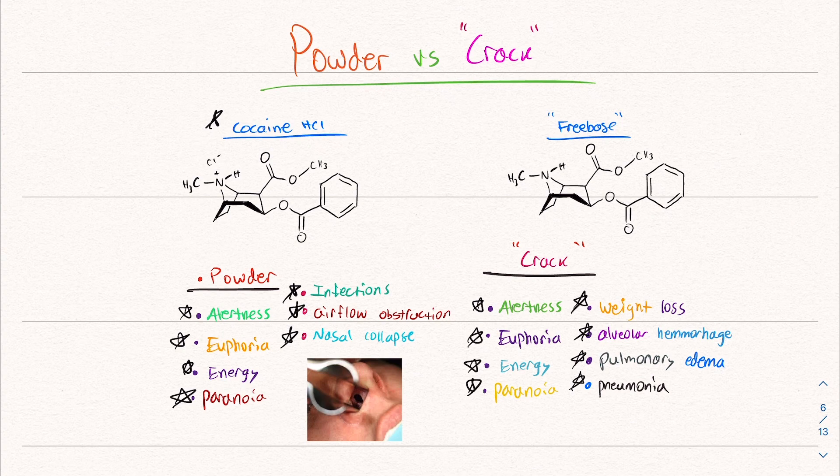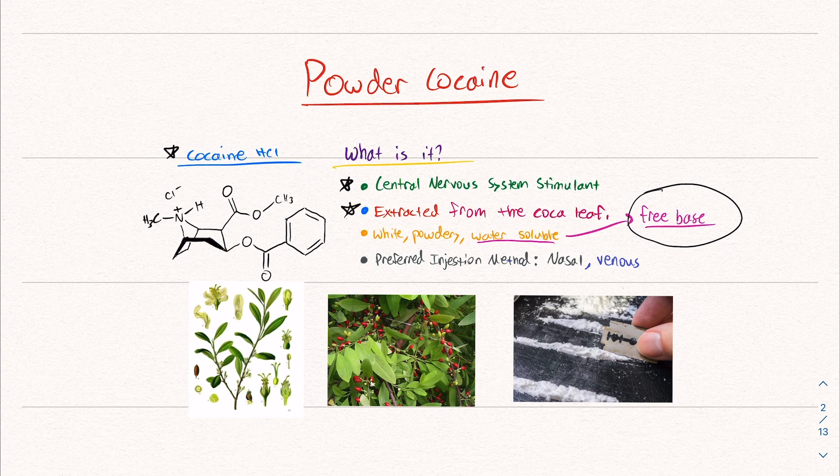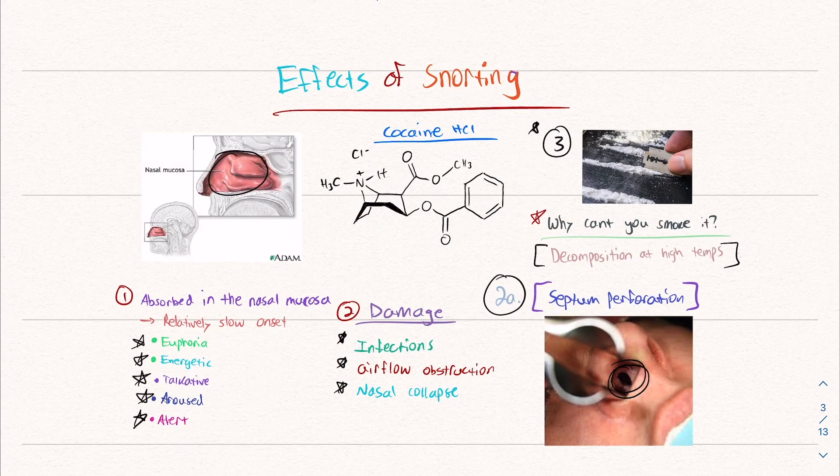So let's go through the summary. Just to summarize what we talked about today, like I said, it's a quick video and I'll do a longer one on cocaine. I just want to do a comparison because I thought it was interesting. So we started out with cocaine in general, powder cocaine. It's a stimulant extracted from the coca leaf. It's white powdery, and most people prefer to snort it. And it exists as cocaine hydrochloride.